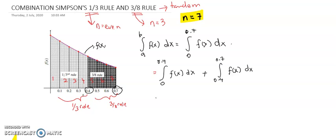After that, you just calculate the integrals for both values. And you will get the final value of your integral of fx from a0 until b0.7. Therefore, we can conclude that Simpson's one-third rule and three-eighth rule will be applied in tandem if and only if our n values are odd numbers.